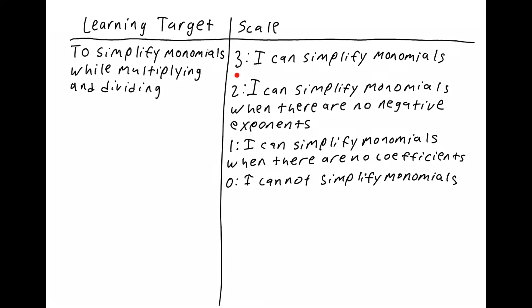You're at a three if you can simplify monomials. Two, you can simplify monomials when there are no negative exponents. One, you can simplify monomials when there are no coefficients. Remember, coefficient is the number in front of the variable. And zero, you cannot simplify monomials.